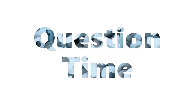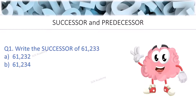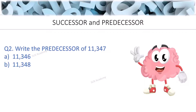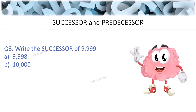Now it's question time! Question 1: Write the successor of 61,233. Option A: 61,232. Option B: 61,234. Question 2: Write the predecessor of 11,347. Option A: 11,346. Option B: 11,348. Question 3: Write the successor of 9,999. Option A: 9,998. Option B: 10,000.